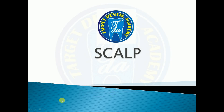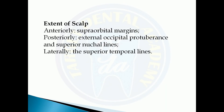The next topic we are going to cover is the scalp. The extent of the scalp is: anteriorly the supra-orbital margins, posteriorly the external occipital protuberance and superior nuchal lines, and laterally the superior temporal lines.